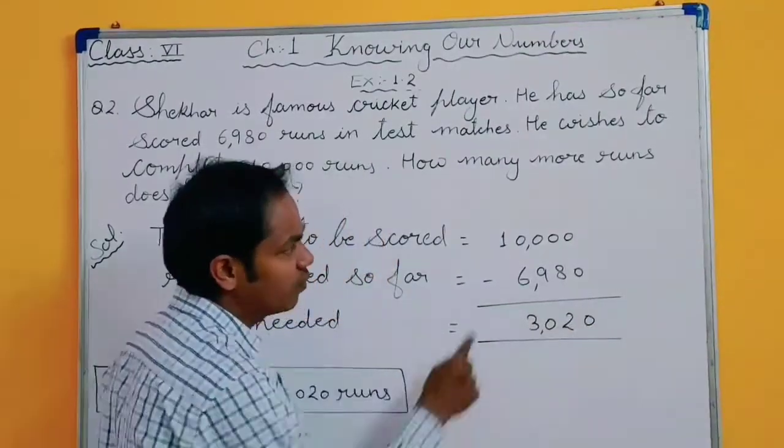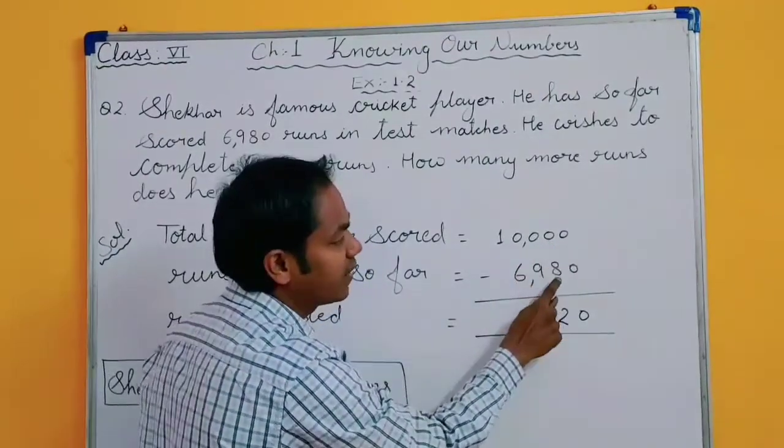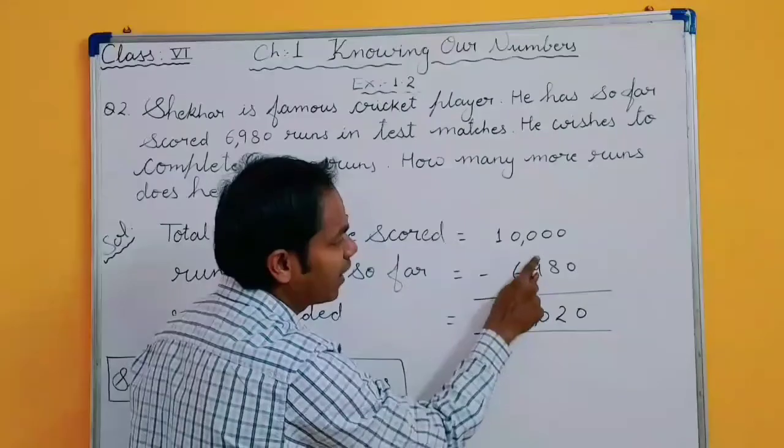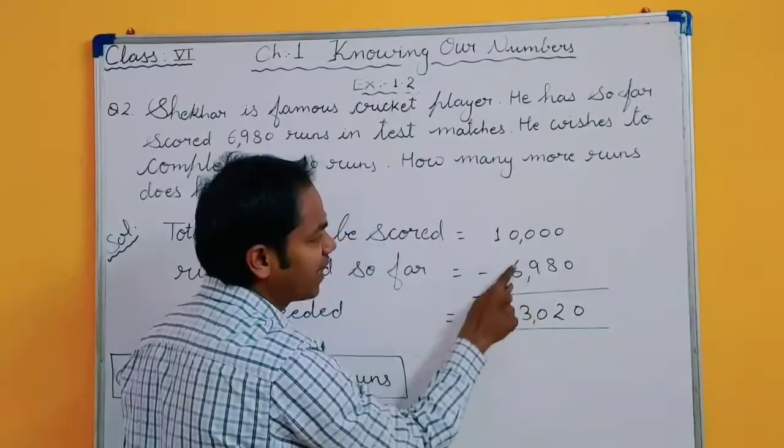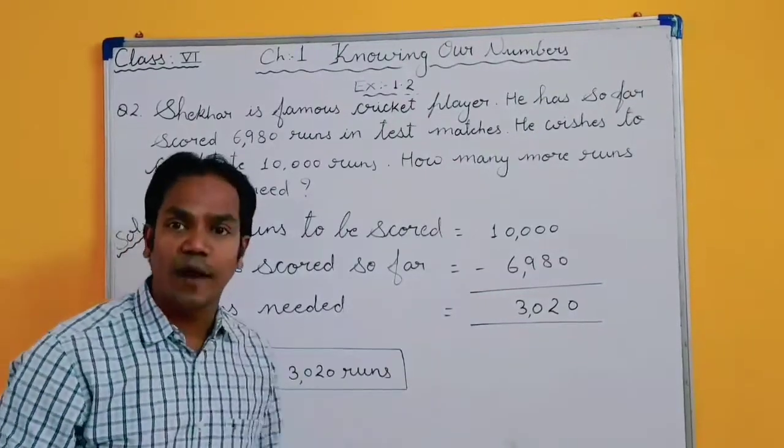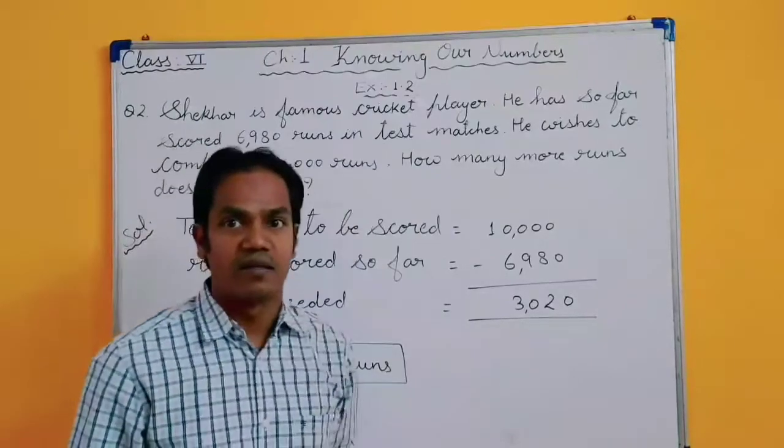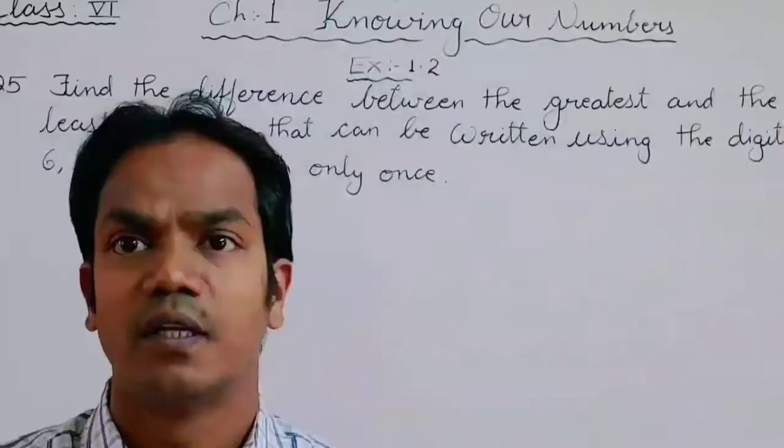0 minus 0 is 0. When you take carry, this will become 10. 10 minus 8, 2. 9 minus 9, 0. And 9 minus 6, 3. So Sekhar needs 3020 runs to complete 10,000 runs. This is your solution.